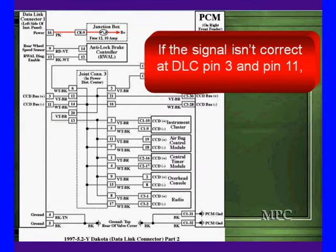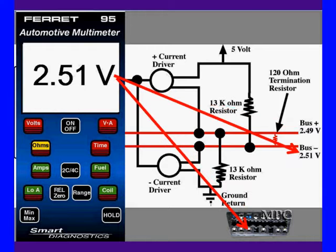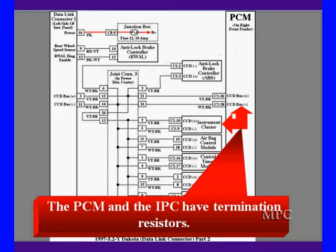If the signal isn't correct at pin 3 and 11, remember, we're looking at the whole world, we can use the voltage to see if we have contact at the termination resistor. Do we have 2.49 on the positive bus? Do we have 2.51 on the minus bus? That tells us that at least we have termination resistors. And remember, only two modules have termination resistors. The instrument cluster and the PCM. Either one of those connected, and we have bias. If they're both disconnected, we don't have bias.